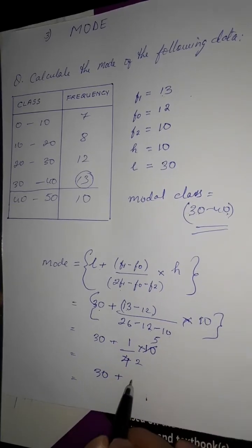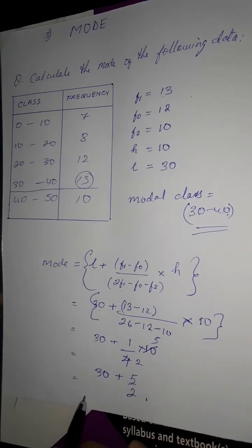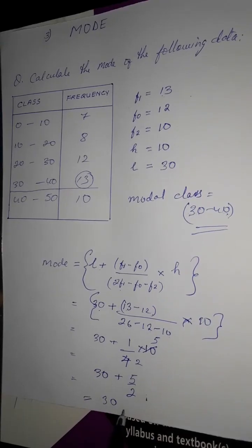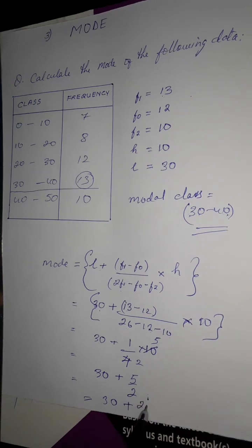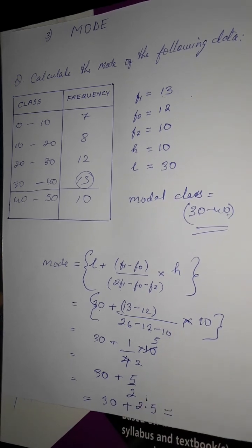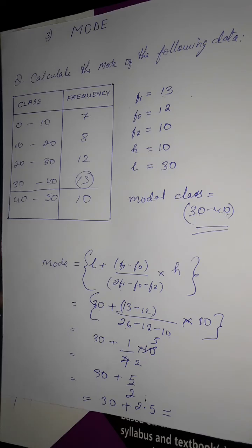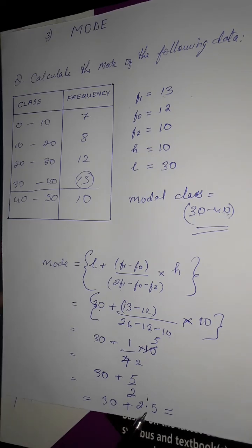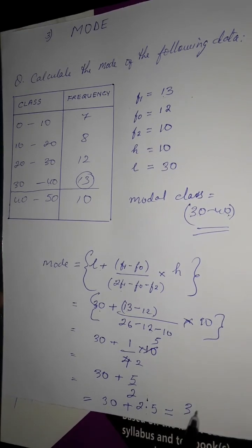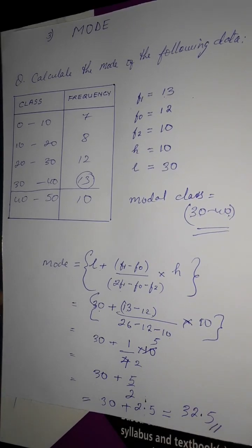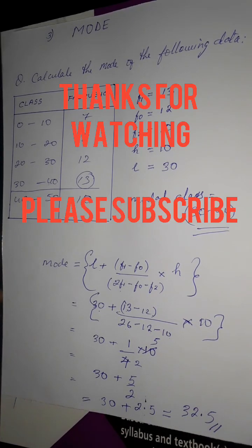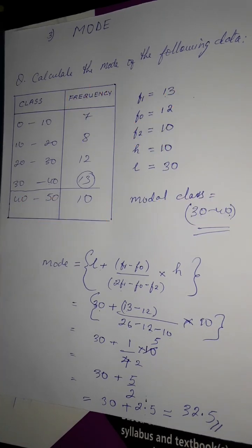5 divided by 2 gives 2.5. So 30 plus 2.5 equals 32.5. The mode is 32.5.